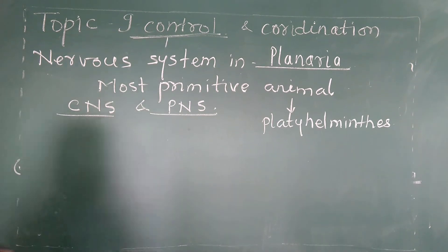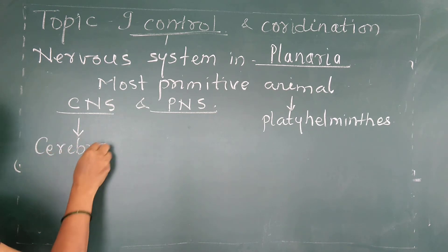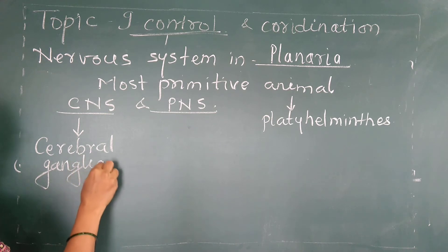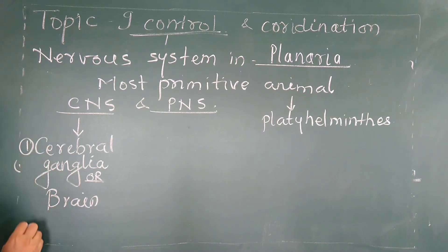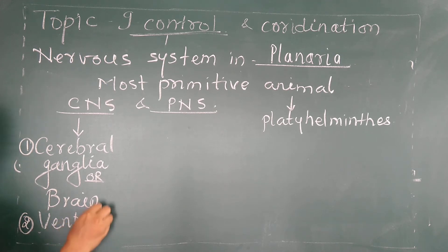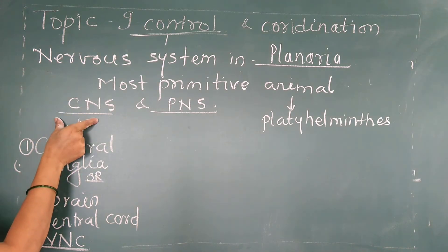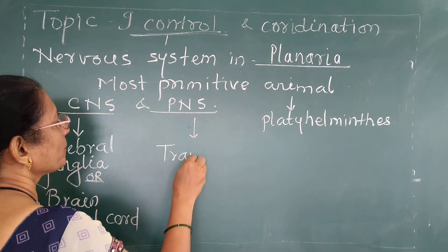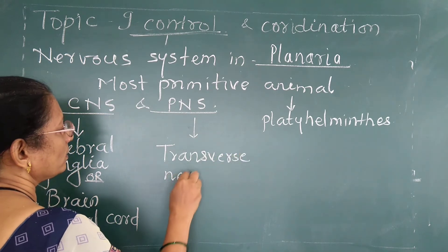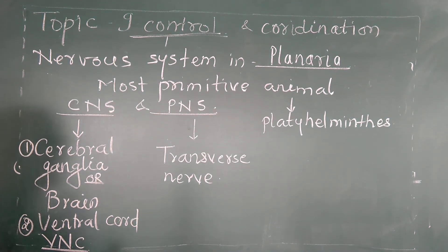The CNS in planaria is because of the presence of cerebral ganglia, which means the brain. The second part of the CNS is called the ventral nerve cord (VNC). So the brain and ventral nerve cord are the parts of the CNS. The peripheral nervous system consists of transverse nerves — nerves that join the ventral nerve cord.